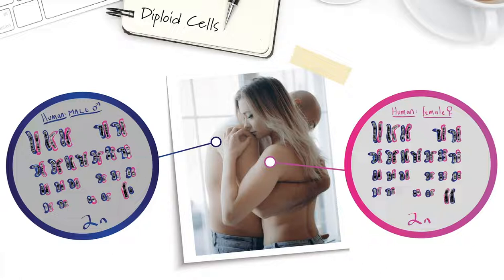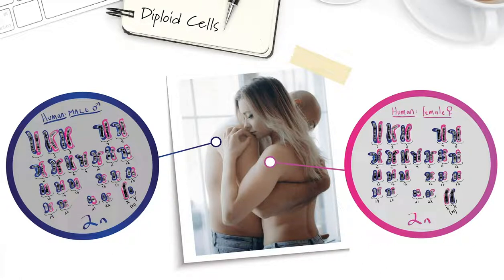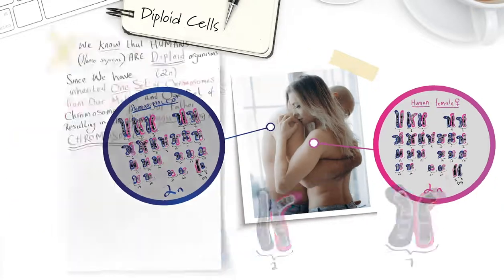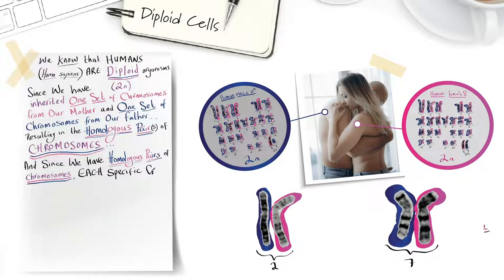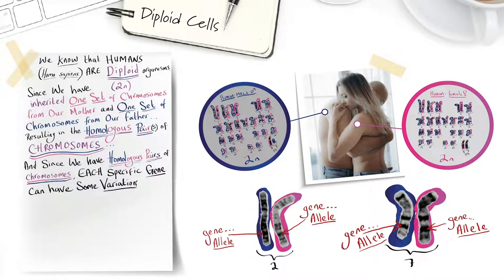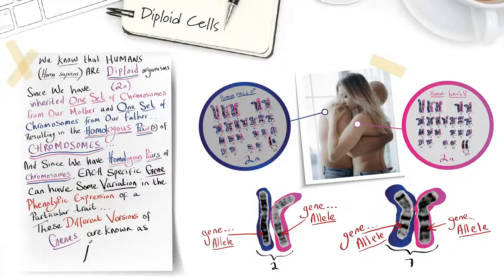Each homologous pair is designated a number: chromosome number 1, number 2, number 3, number 4, etc., and each chromosome contains the genes for particular traits. Since we have homologous pairs of chromosomes, each specific gene can have some variation in the phenotypic expression of a particular trait. These different versions of genes are known as alleles.